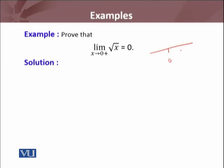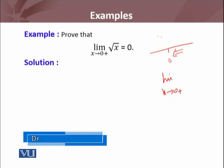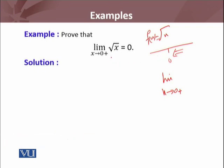The first example is: we have to prove that the limit as x approaches 0 from the right side of f(x) = √x equals 0. If we approach 0 from the right side, we write it as limit x→0⁺ of f(x) = √x equals 0. The function is not defined for negative numbers, because the square root of negative numbers gives complex numbers — that's why we study complex numbers.